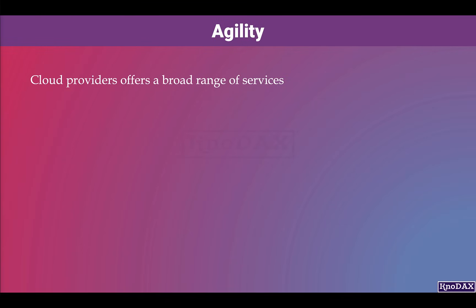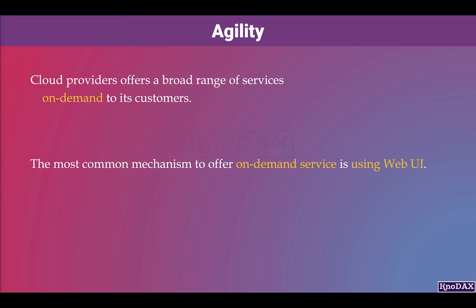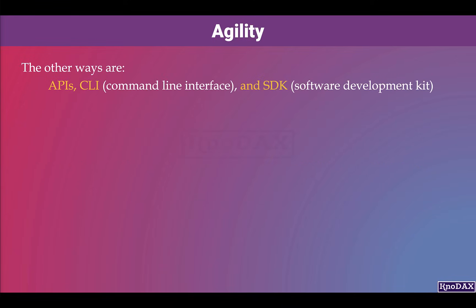Let's start with agility, one of the key features of cloud computing. Cloud providers offer a broad range of services on demand to their customers. The most common mechanism to offer on-demand services is a web UI, but other ways include APIs, command line interface (CLI), and programmatic ways such as using an SDK.